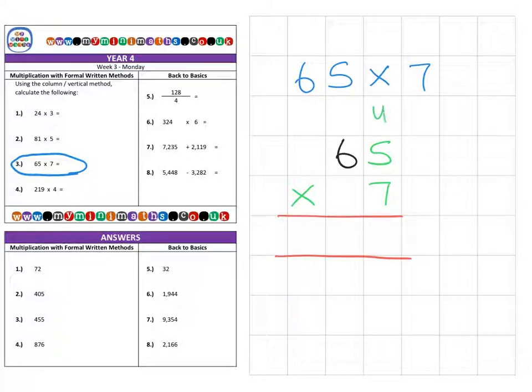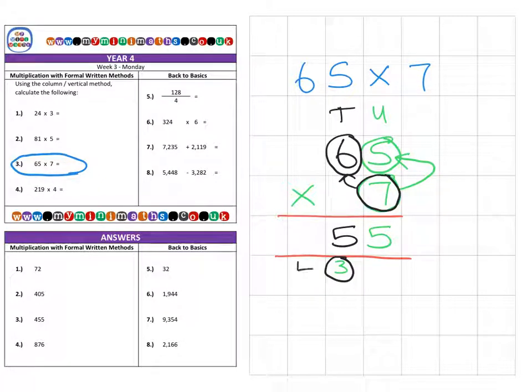First, we're going to focus on the units, so it's the 7 multiplied by the 5. Seven fives are 35, so I place my 5 in the units column and carry the 3 for the 30 into the tens column. Then I multiply the 7 by the 6 for the 60 in the tens column. Seven times six is 42 plus the 3 to make 45. I place my 5 in and carry the 4 over. We've used all our numbers up, so in the hundreds column I'm just going to put this straight in for a final answer of 455.